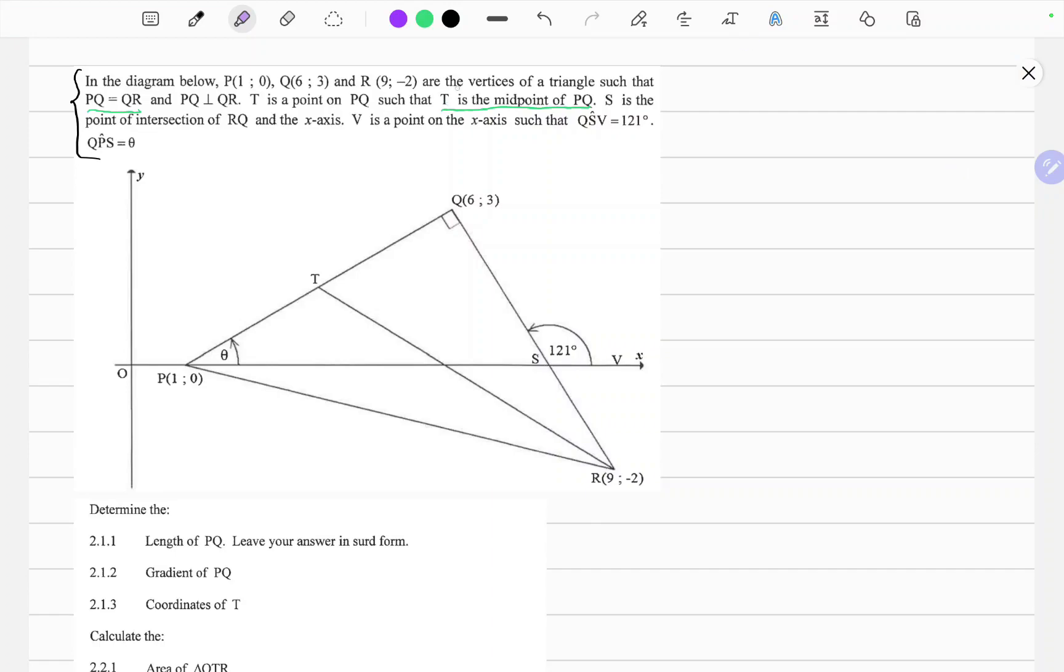The first important point is that T is a midpoint of PQ. So this is PQ and T. This here is the midpoint and PQ is equals to QR. It's the second important information. So PQ is equals to QR.